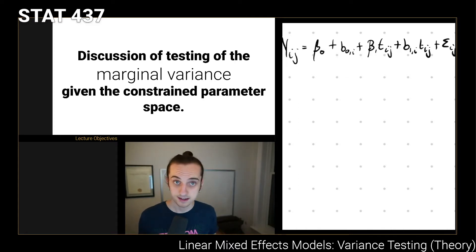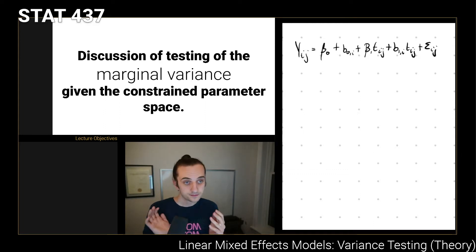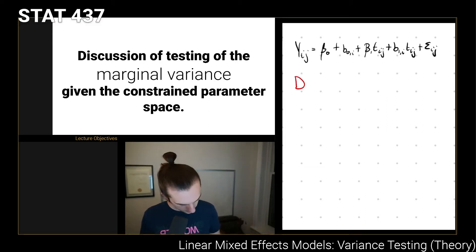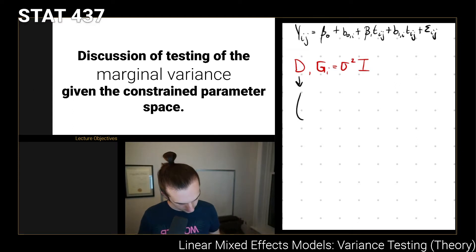This is a fairly simple model, and what we want to think about is what variance parameters we're going to need to estimate. We need to estimate the D matrix and G_i, which is just sigma squared times the identity. This D matrix, using the notation from last video, means we're estimating three parameters: the variances and the covariances.